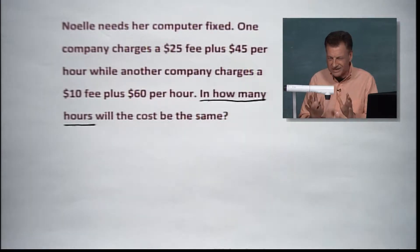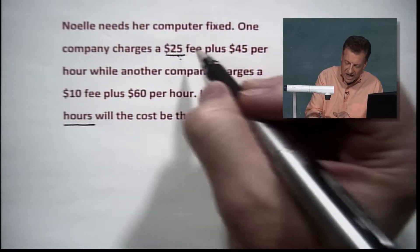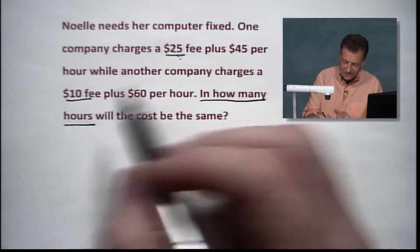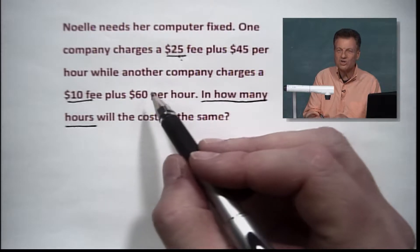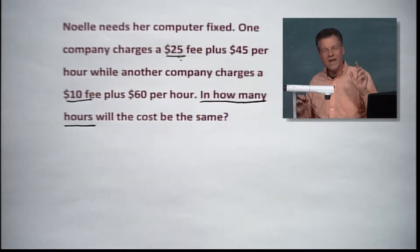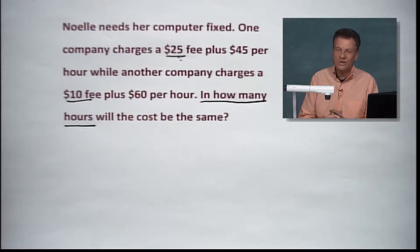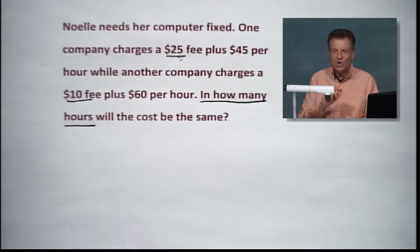Now, there's some similarities here. But you notice the first company started out a little bit higher than the second company, but the first company has a lower per hour rate, while the second company charges more per hour. What we want to do is figure out how many hours is it going to take before they become one and the same. Then you can really start to pick by the amount per hour that you're going to charge, who you want to go with, if you think your repair is going to last over a certain amount of time.